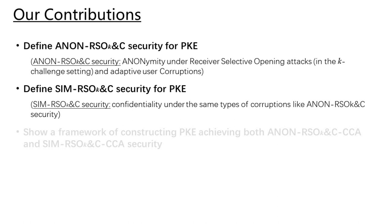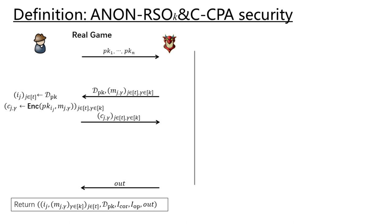Focusing on these problems, we define anonymous RSO-K&C security for PKE, which is anonymity under receiver-selective opening attacks in the K-challenge setting and adaptive user corruptions. And then we define a confidentiality notion under the same types of corruptions. Now we turn to the definition of anonymous RSO-K&C security.